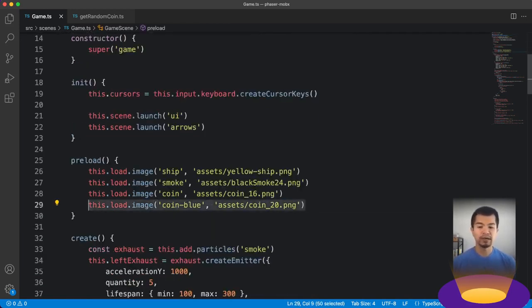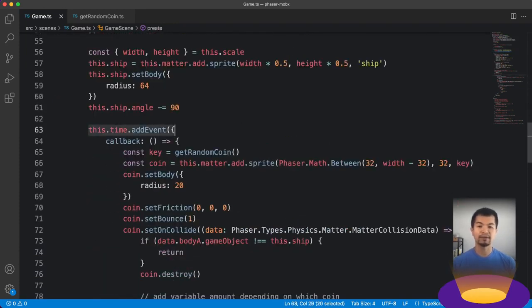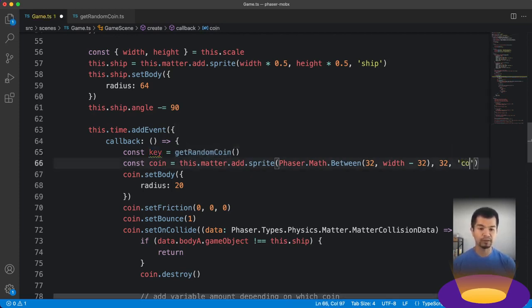So we call it coin-blue. And then in our create here where we do this time.addEvent. So every one second, we're going to create a random coin. We're going to do getRandomCoin, which is a key of a coin, which is going to be coin or coin-blue. Now, before we just had this coin, so that was only going to give you one type of coin. So now we've added different types of coins and we're going to use that key given to us by our getRandomCoin function.